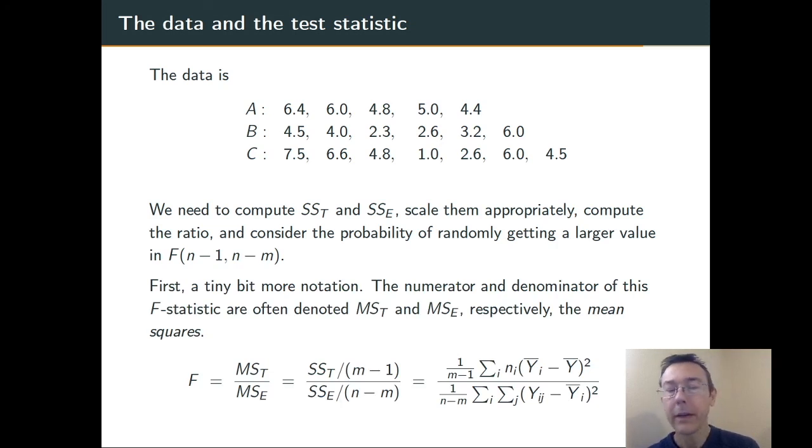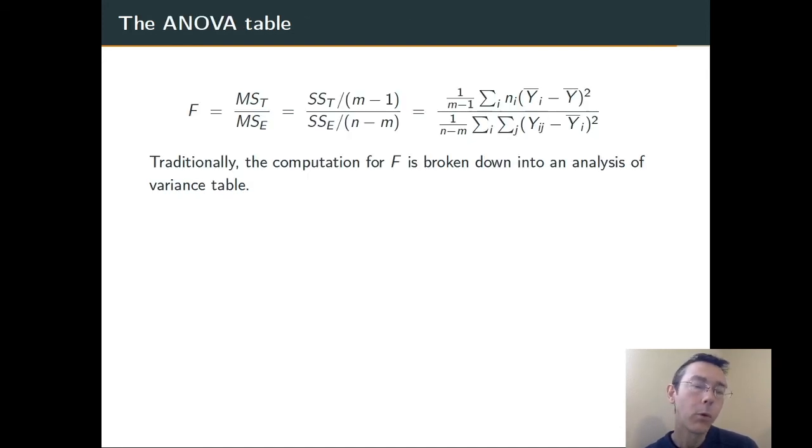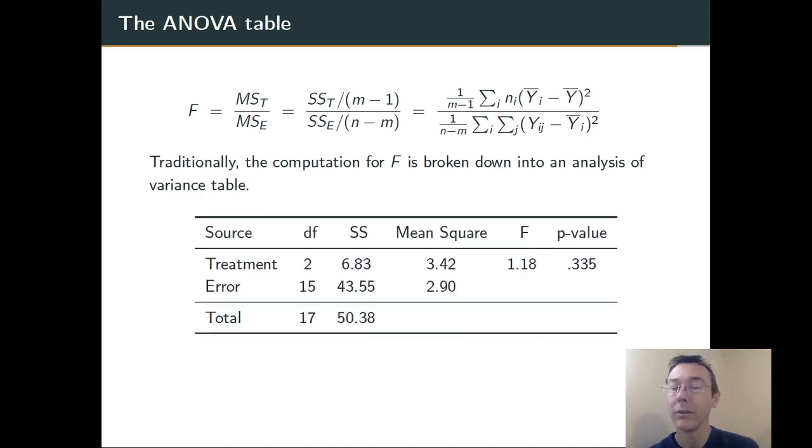One last piece of vocabulary here. The numerator and denominator of the F statistic in this situation get called the mean squares. It's traditional to report the results of an analysis of variance using an ANOVA table, such as this one. We show degrees of freedom for each of the groups, the treatment and the error, the treatment sum of squares and the error sum of squares. We show the sum of squares themselves and the mean squares. The F statistic and then finally the P value. Of course that P value is representing the probability of randomly getting an F statistic greater than or equal to 1.18 in that F distribution. In this case, that's clearly greater than our level of significance. There is not sufficient evidence to say that these groups have different population means.